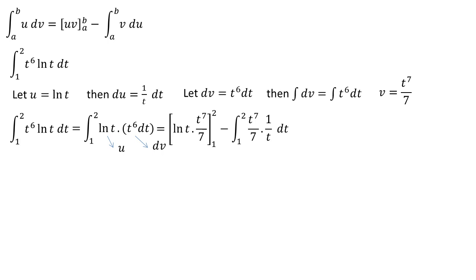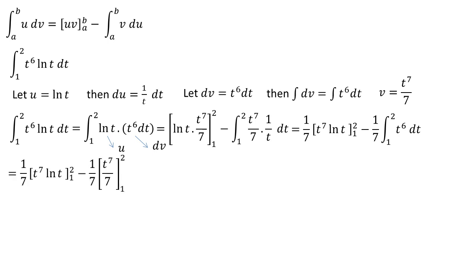We get 1 over 7 times t to the power of 7 times ln(t) from 1 to 2, minus 1 over 7 times the integral of t to the power of 6 dt from 1 to 2. This simplifies to 1 over 7 times t to the power of 7 times ln(t) from 1 to 2, minus 1 over 7 times t to the power of 7 over 7 from 1 to 2.